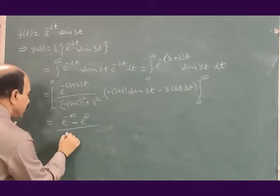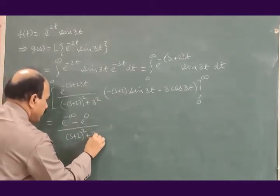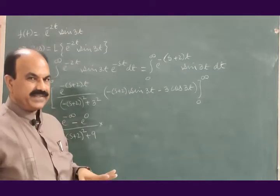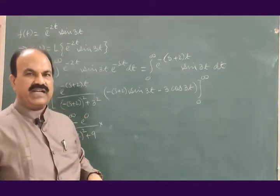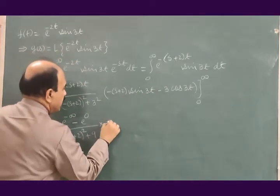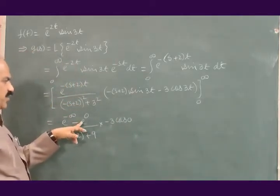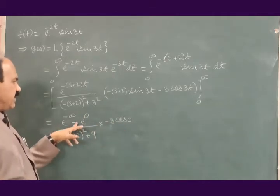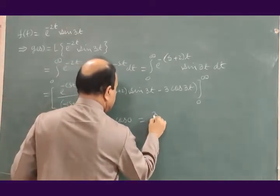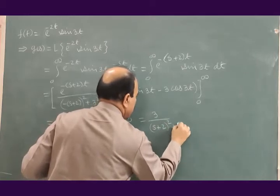So the denominator is (s plus 2) squared plus 9. When we put t equal to infinity, the exponential term goes to 0. When we put t equal to 0, sin(0) is 0, so the first term becomes automatically 0. Cos(infinity) is undefined, cos(0) is defined. What is left from this bracket is simply minus 3 cos(0), which is 1, into e to the power 0, which is 1. So this is equal to 3 divided by (s plus 2) squared plus 9.